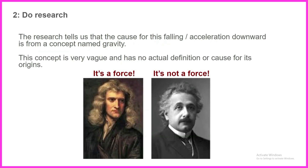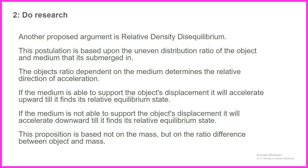Number two, we do research. What was the research based on this phenomenon? The research tells us that the cause for this falling acceleration downward is from the concept named gravity. This concept is very vague and has no actual definition or cause for its origins. There are two explanations: Newtonian gravity — it's a force! And Einsteinian gravity — it's not a force. Weird, as they both contradict one another but want to be used in the same pond. He says gravity is very vague and no one knows what it is even though people have studied it since the days of Newton. Another proposed argument is relative density disequilibrium, based upon the uneven distribution ratio of the object and the medium it is submerged in.